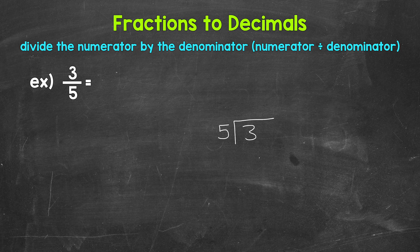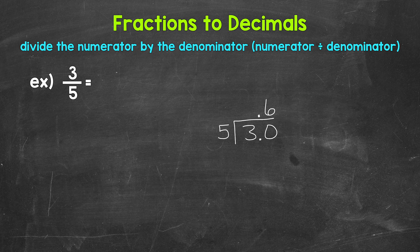Now we can work through the division process. We have 3 divided by 5. How many whole groups of 5 in 3? We can't do that, so we need to use a decimal and a zero in order to work through this. Once we have the decimal and the zero, bring the decimal straight up into where the quotient, the answer, will be. And now we can think of this as 30 divided by 5, which is 6. So we put the 6 above the zero.